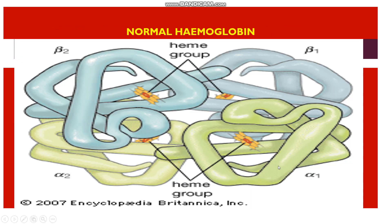Here you can see the quaternary structure of hemoglobin. Each hemoglobin consists of two parts: an iron porphyrin group called the heme, and a globin protein. The globin protein has four polypeptide chains — two alpha chains and two beta chains — and each chain is linked to a heme group. Here you can see the two alpha chains, the two beta chains, and the four heme groups, each linked to a polypeptide.